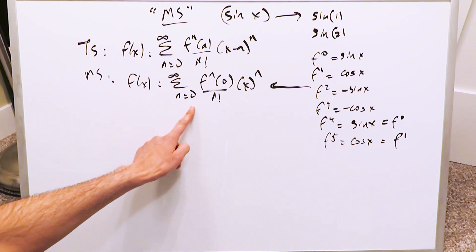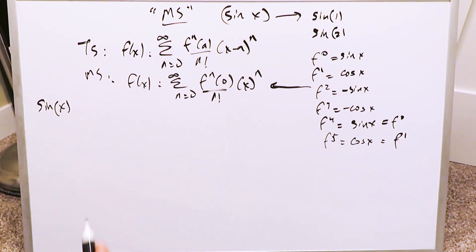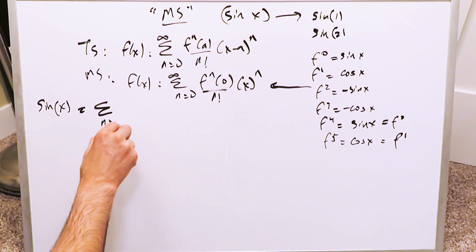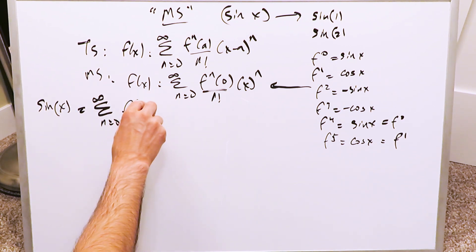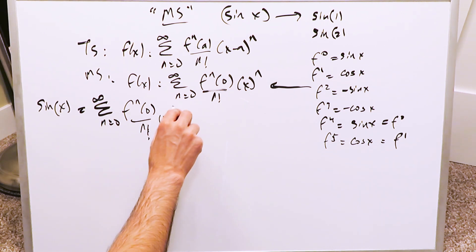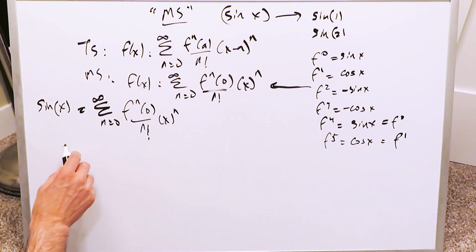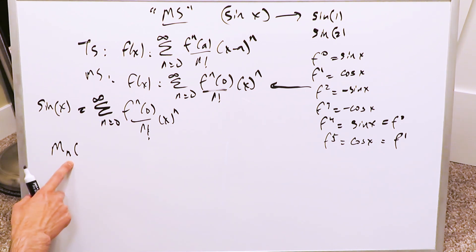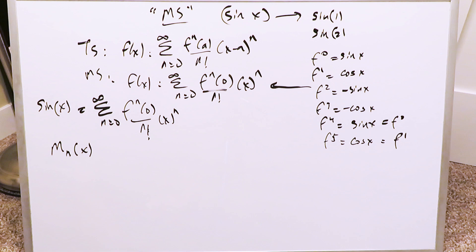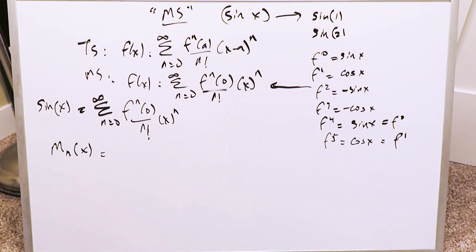When looking at this with regards to sine x, you can write it as a sum from n equals 0 to infinity, placing terms here with n factorial in the denominator and x to the power of n. When you expand it out, you start creating your Maclaurin polynomials of n terms. For neatness, let's call this the nth Maclaurin polynomial with respect to variable x. We'll start itemizing and classifying everything.